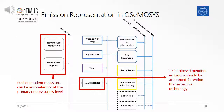In summary, fuel-dependent emissions can be accounted for at the primary energy supply level — this can be, for example, natural gas production or natural gas imports. Technology-dependent emissions should be accounted for within the respective technology. These emissions will vary depending on different operating conditions. Examples for power plants where technology-dependent emissions could be used are thermal power plants fueled with fossil fuels or with biomass.